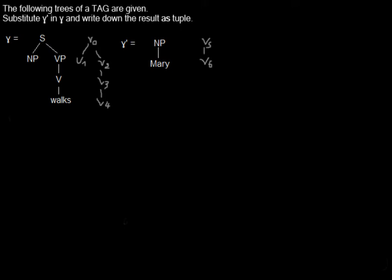In this video I'm showing you the substitution in every detail and according to the formal definition of the substitution. We are asked to substitute gamma bar into gamma and to write down the result as a tuple, which in this case is a triple, as you may remember from the previous videos.